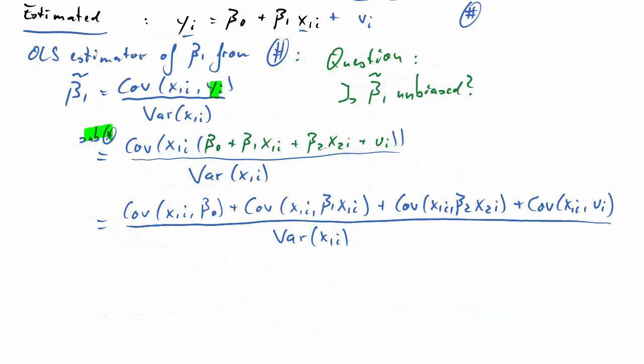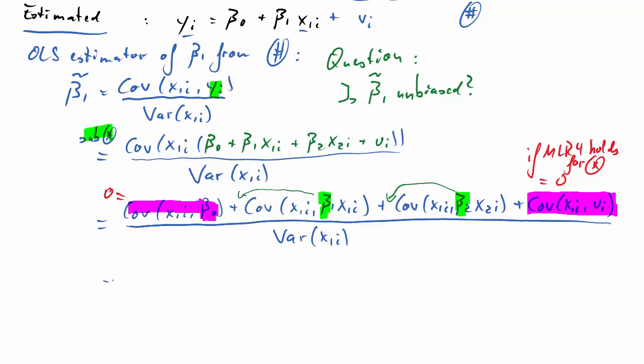This is the same as the covariance between x1 and beta 0 plus the covariance between x1 and beta 1 times x1 plus covariance of x1 and beta 2 times x2 plus the covariance of x1 and ui, divided by the variance of xi. Now we're going to look at these terms in turn. The covariance between x1 and beta 0 is zero because beta 0 is constant, not a random variable. The covariance between x1i and ui is zero if the multiple linear regression assumption for the zero conditional mean holds. For these two terms, beta 1 and beta 2 can come outside the covariance operator.